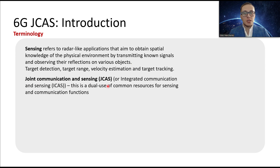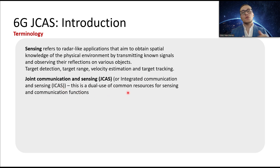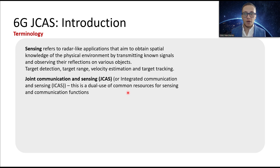Joint communication and sensing — or in other terms, integrated communication and sensing — is the dual use of common resources for both sensing and communication functions and features.